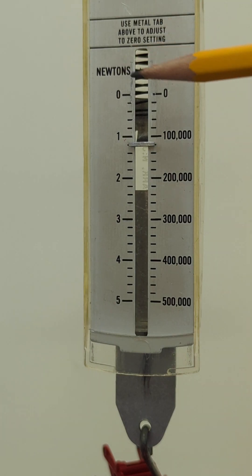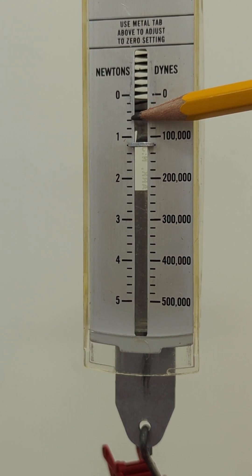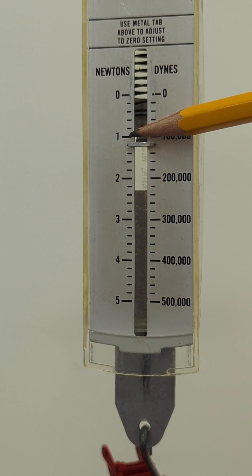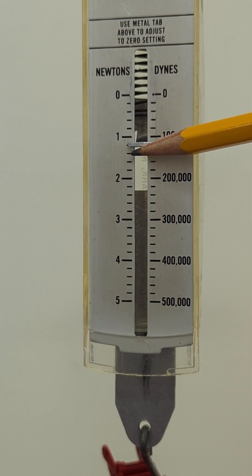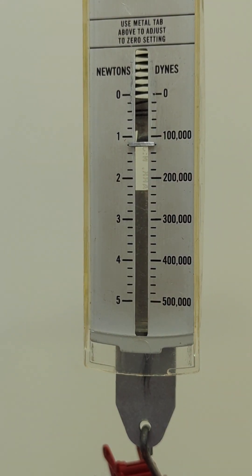So this line here would be 0.2 then another 0.2 so 0.4, 0.6, 0.8, 1. If we kept going 1.2, 1.4, 1.6, 1.8, 2.0, 2.2 and so on.